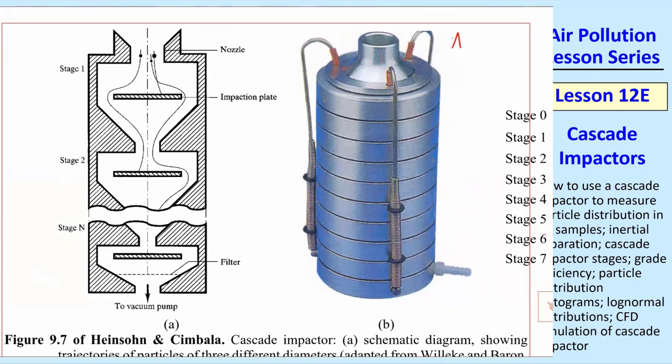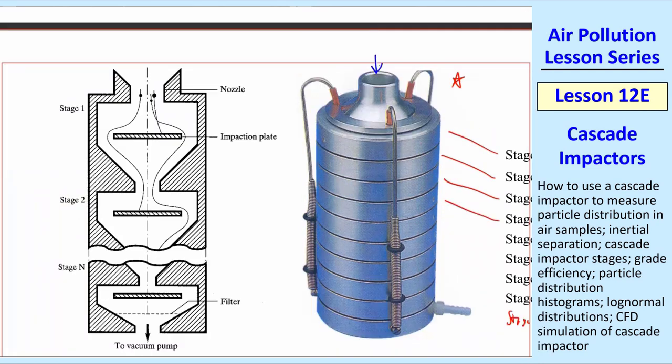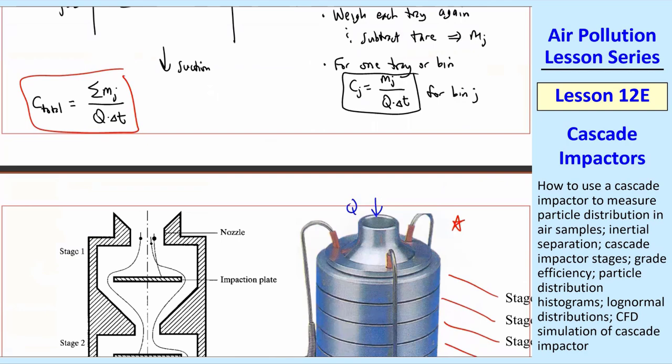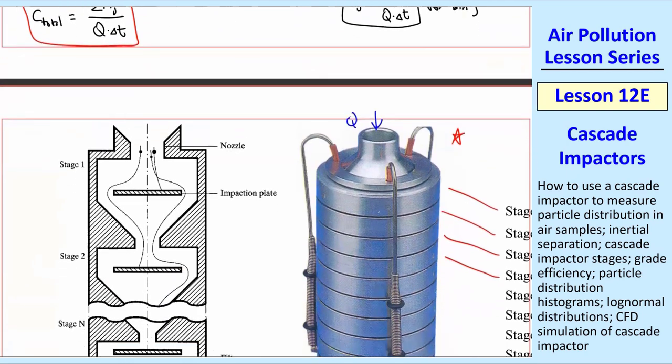Here are some pictures. This is very similar to the one that I bring into class. You can see that there's nine stages since we start numbering with zero. The air comes in at the top, and there's a suction device, a vacuum system that sucks it out. If there's no leaks, you have the same Q coming in and coming out. Again, you just sample that for some time, and then you could use these equations to calculate the mass concentration for each range of particles.